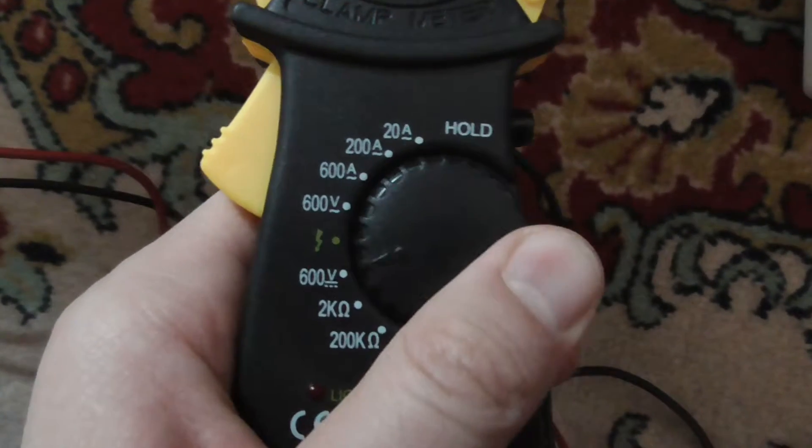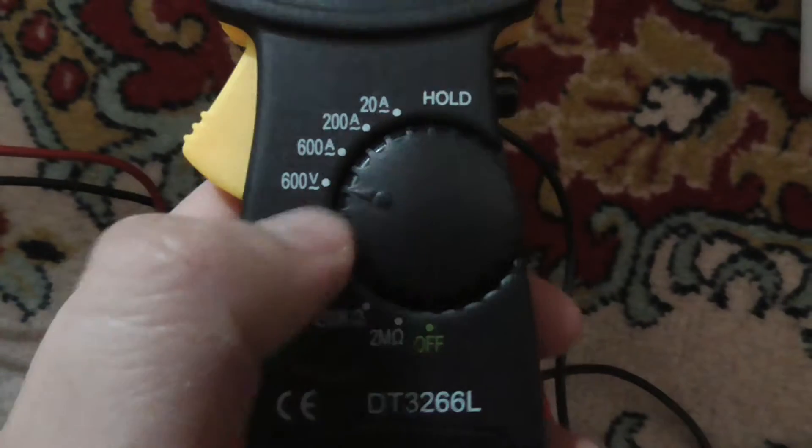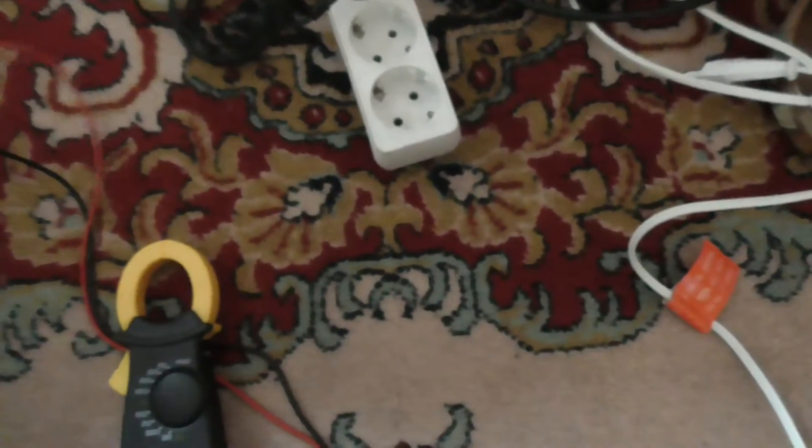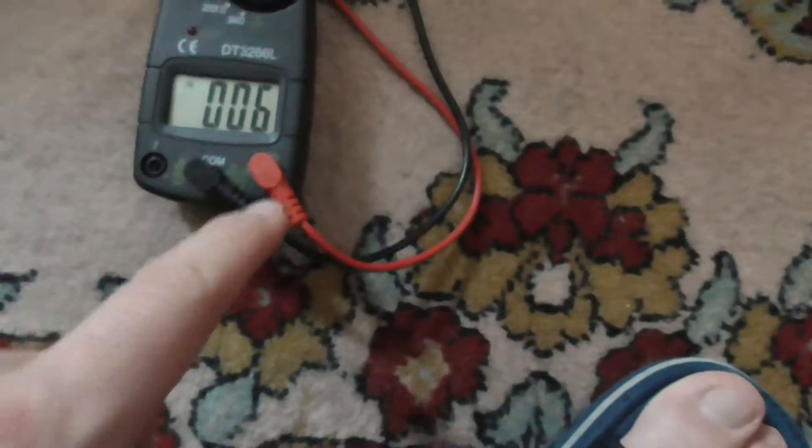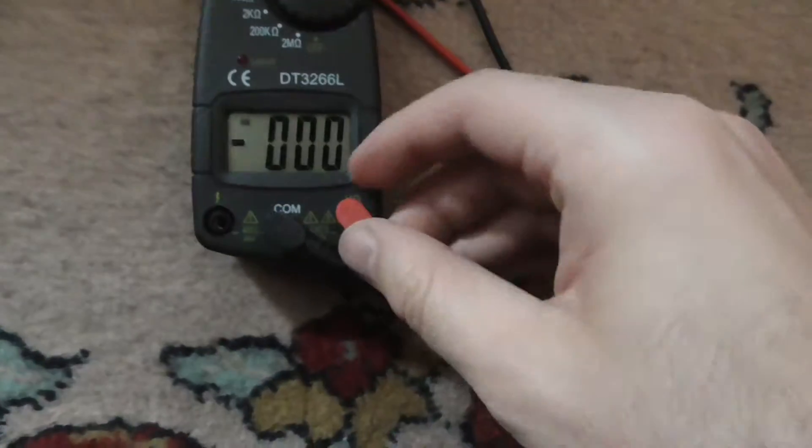So let's set it there, 600 volts AC. This one is there, and in the same way, this one is here on the right side.